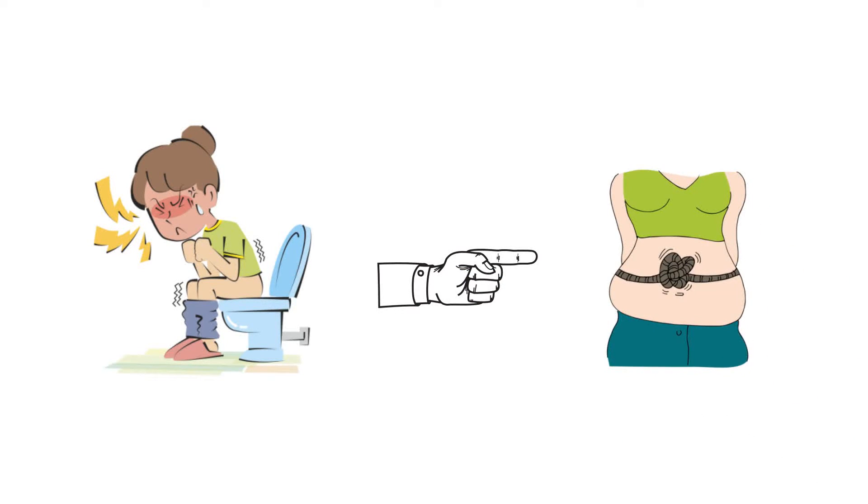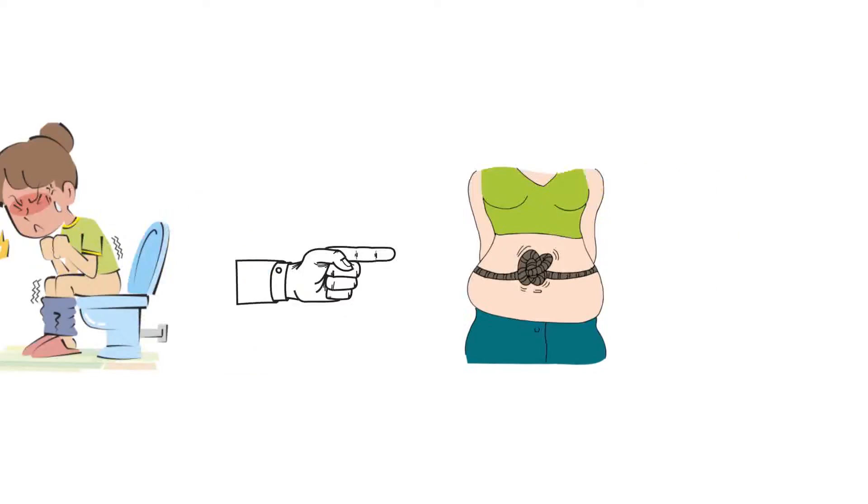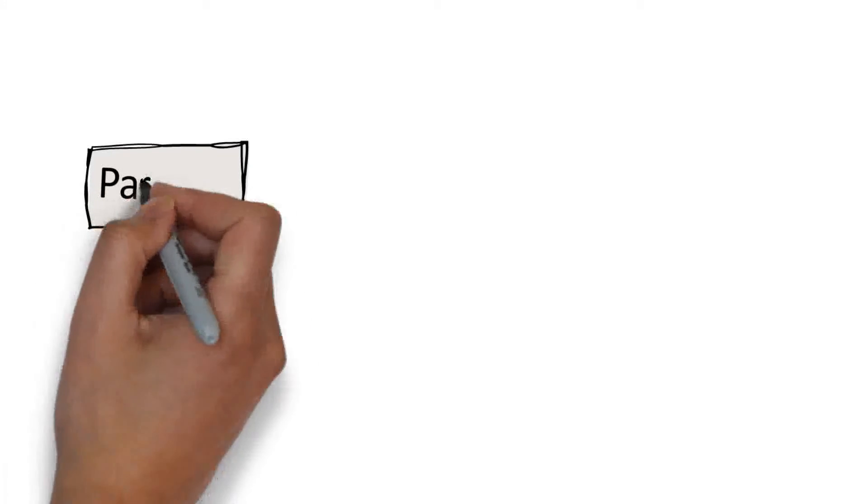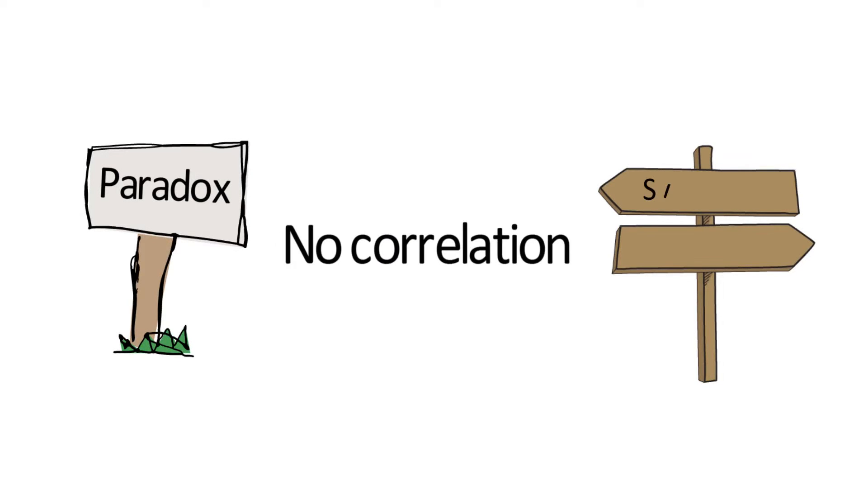Whilst there is currently no unifying explanation for these common symptoms, there are some intriguing clues. To begin with, researchers have recognised a surprising paradox. In patients troubled by abdominal bloating and distension there is no clear correlation between the symptoms and changes in abdominal girth measurement.